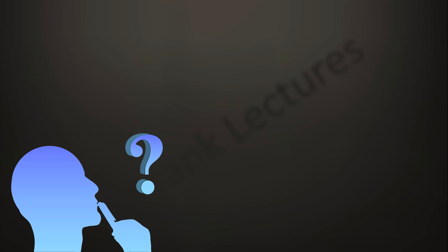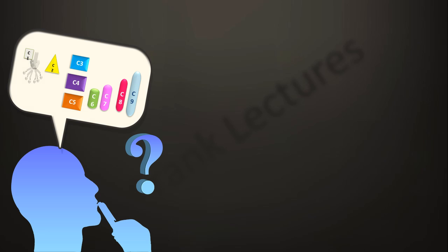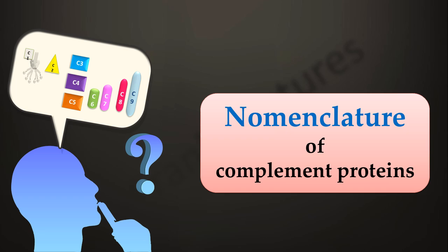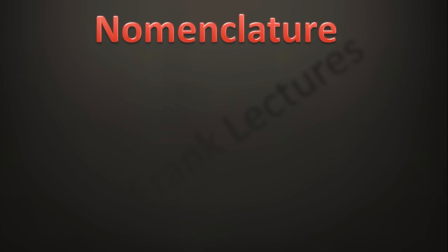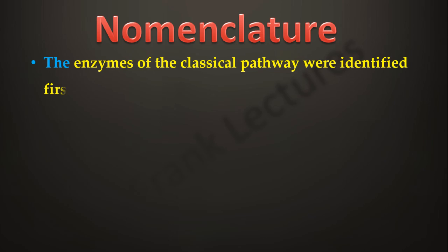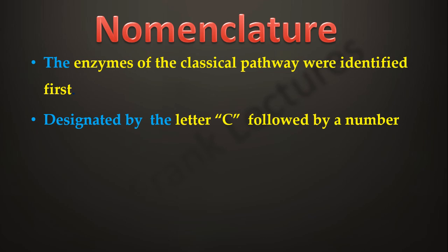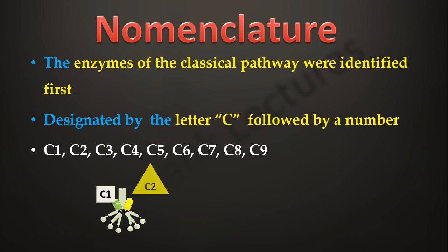Before going into details of these pathways, it is important to first understand the nomenclature of the complement system. The enzymes of the classical pathways were identified first. They are designated by the capital letter C followed by a number. These numbers indicate their order of discovery. There are nine such proteins, C1 to C9.